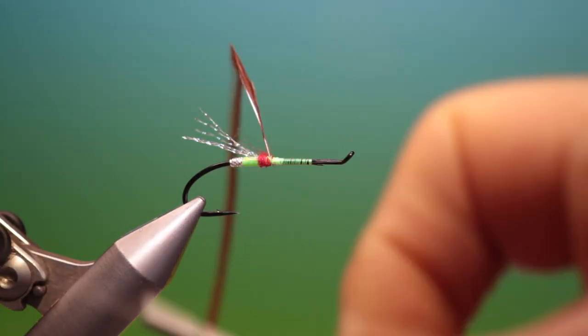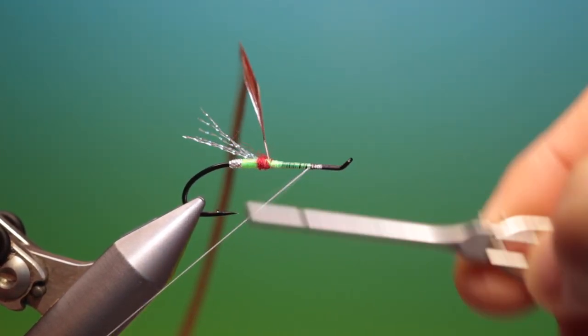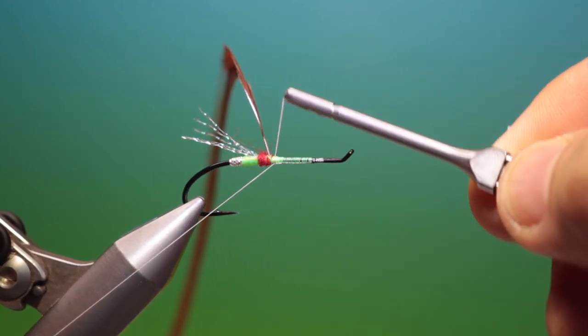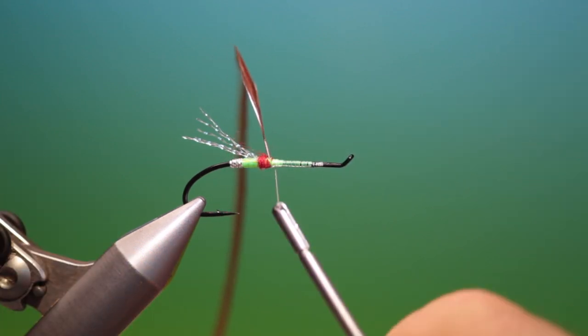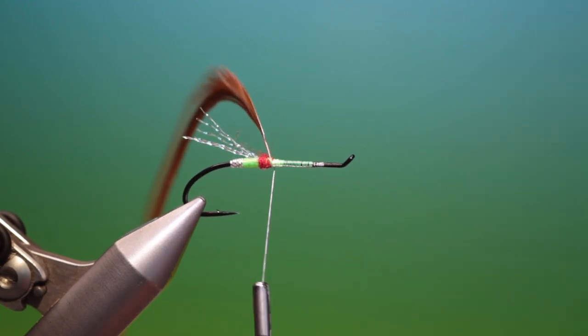Then I've got dyneema to do the deer hair and we just go back, attach that and we'll go back into the hackle. So I'll remove that like that.